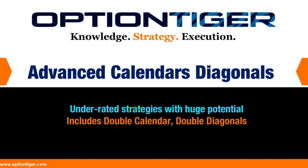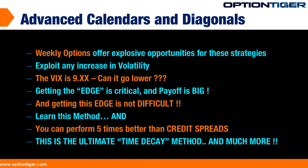Hey everybody, it's Hari Swaminathan from optiontiger.com. In this video I wanted to talk about some advanced calendars and diagonals. Calendars and diagonals are really one of the most underrated strategies and have huge potential. We're also talking about double calendars and double diagonals as well, and with weekly options there are really explosive opportunities — a possibility of a reward to risk of almost two to one or three to one.